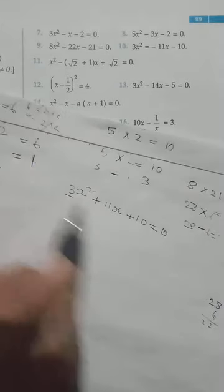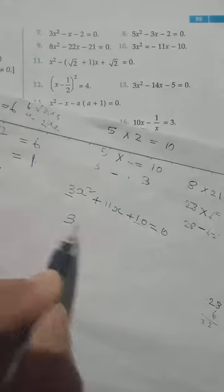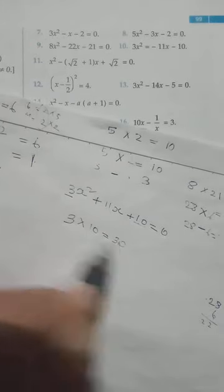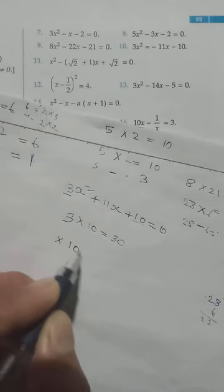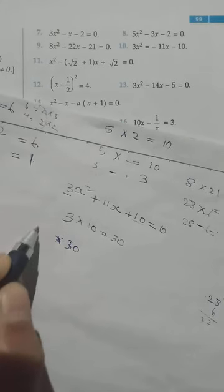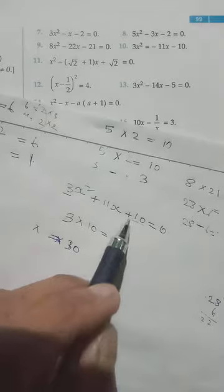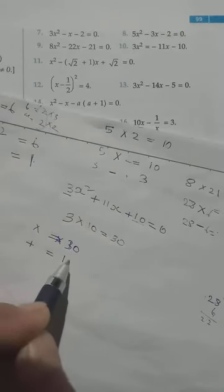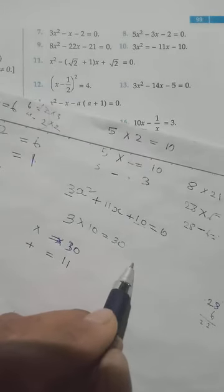We take the coefficient of x squared and the constant. We have 3 and 10, so 3 into 10 gives us 30. We need to find two numbers: if we multiply them we get 30, and since we have a plus sign, if we add them we should get the middle term coefficient, which is 11. What are the possible numbers?